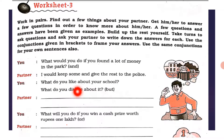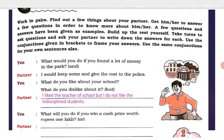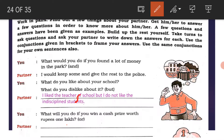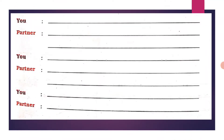You ask: 'What do you like about your school? What do you dislike about it?' Use 'but'. Answer: 'I like the teachers of our school but I do not like the indisciplined students.' Next question: 'What will you do if you win a cash prize worth rupees one lakh?' Use 'or'. Answer: 'I will help my poor friends or deposit it in the bank.' Two independent clauses.